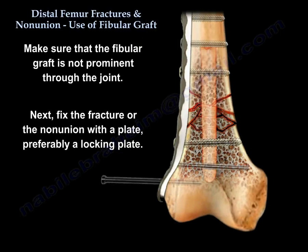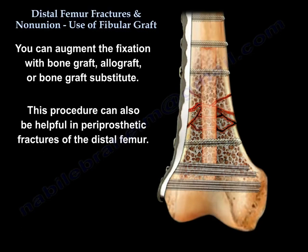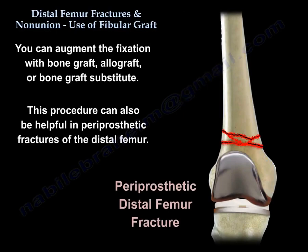Make sure the fibular graft is not prominent through the joint. Then after that, fix the fracture or the nonunion with a plate, preferably a locking plate. You can augment the fixation with bone graft, allograft, or bone graft substitute.